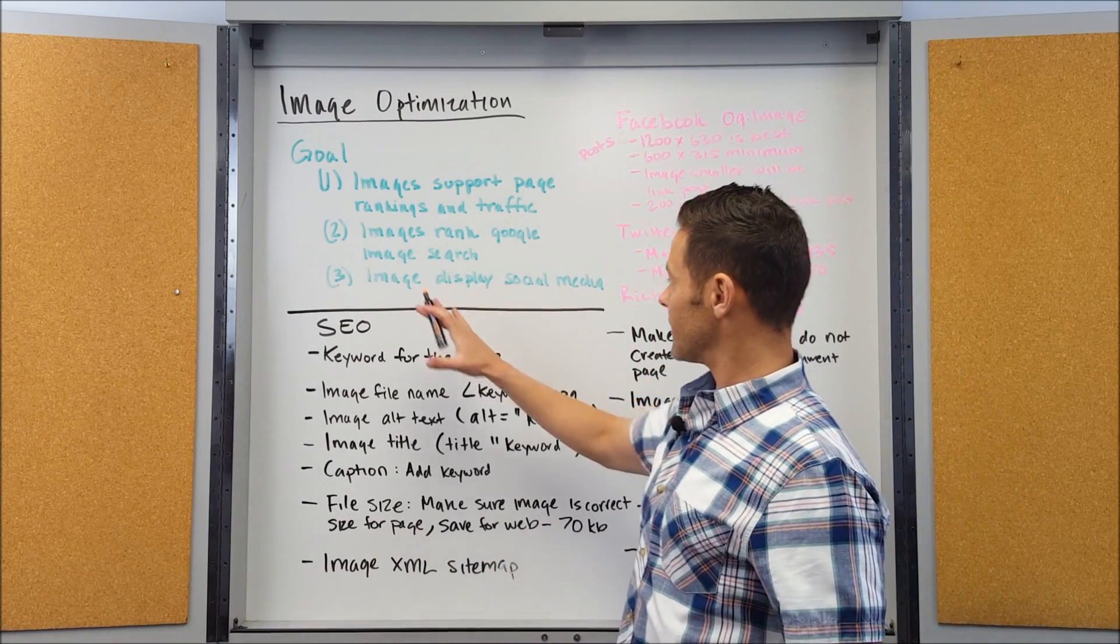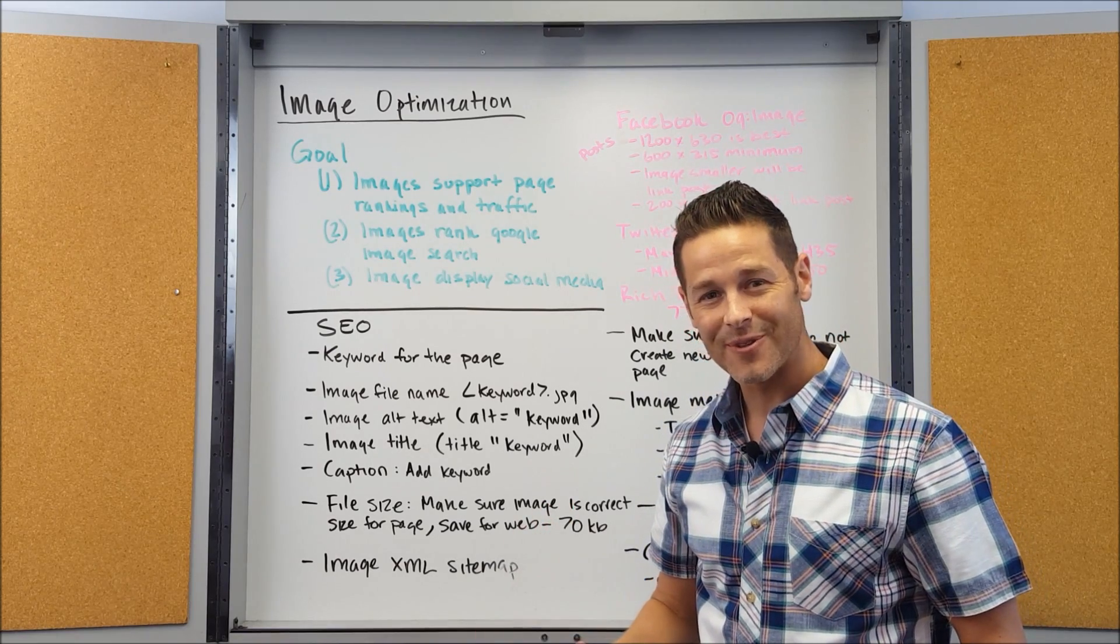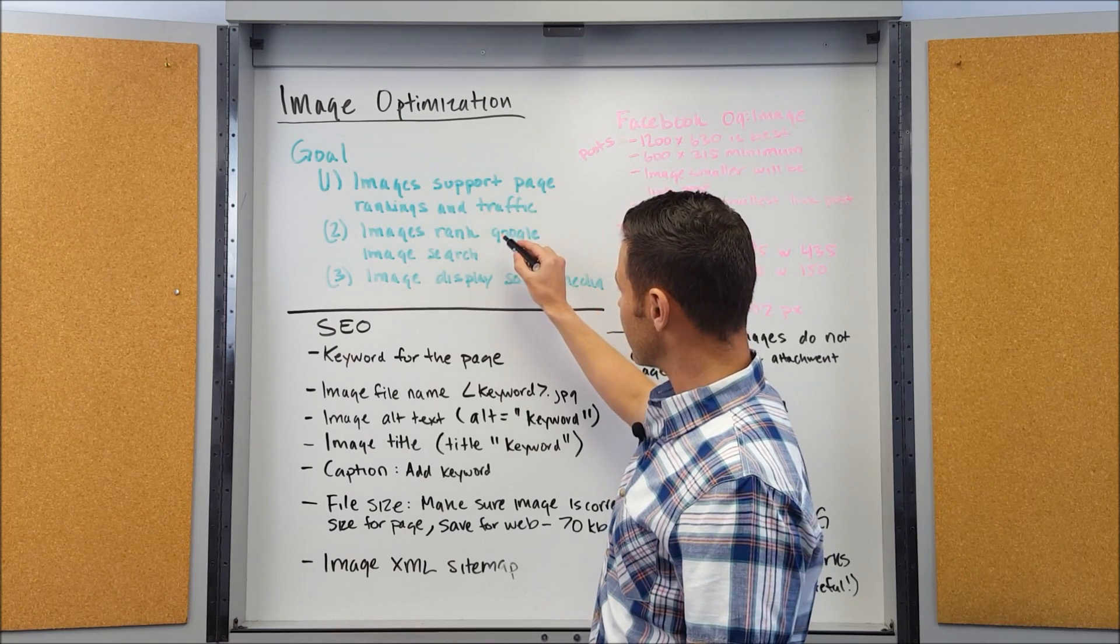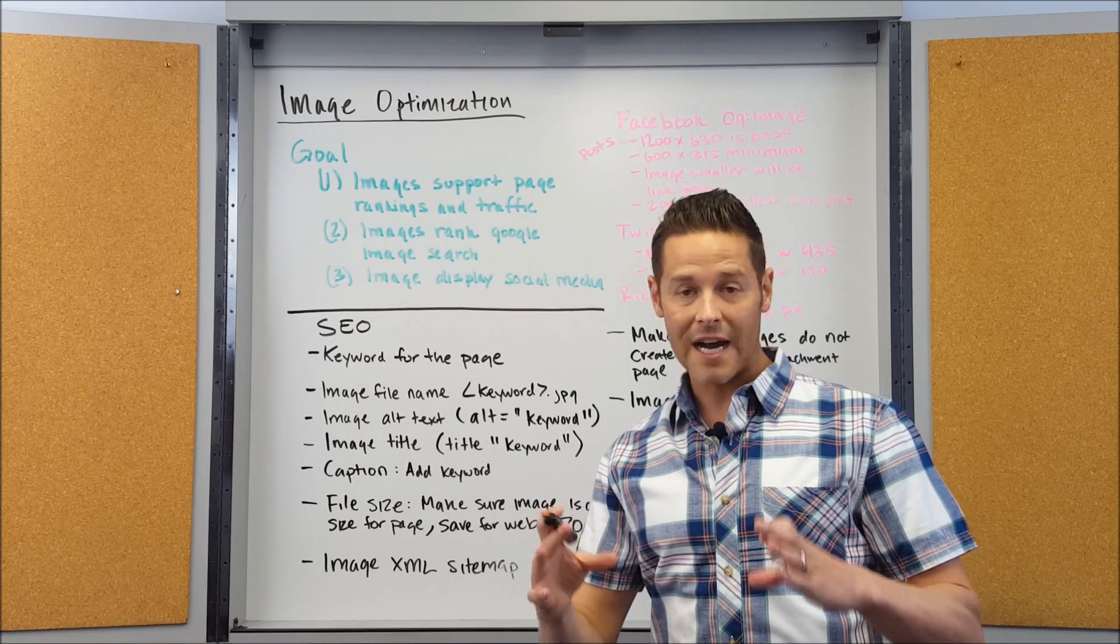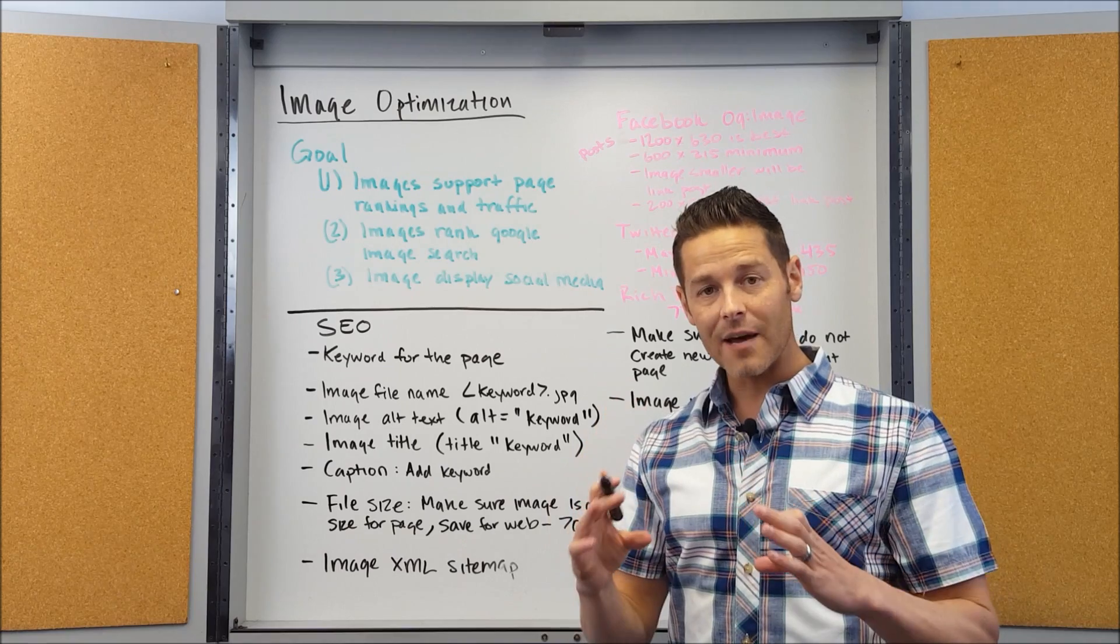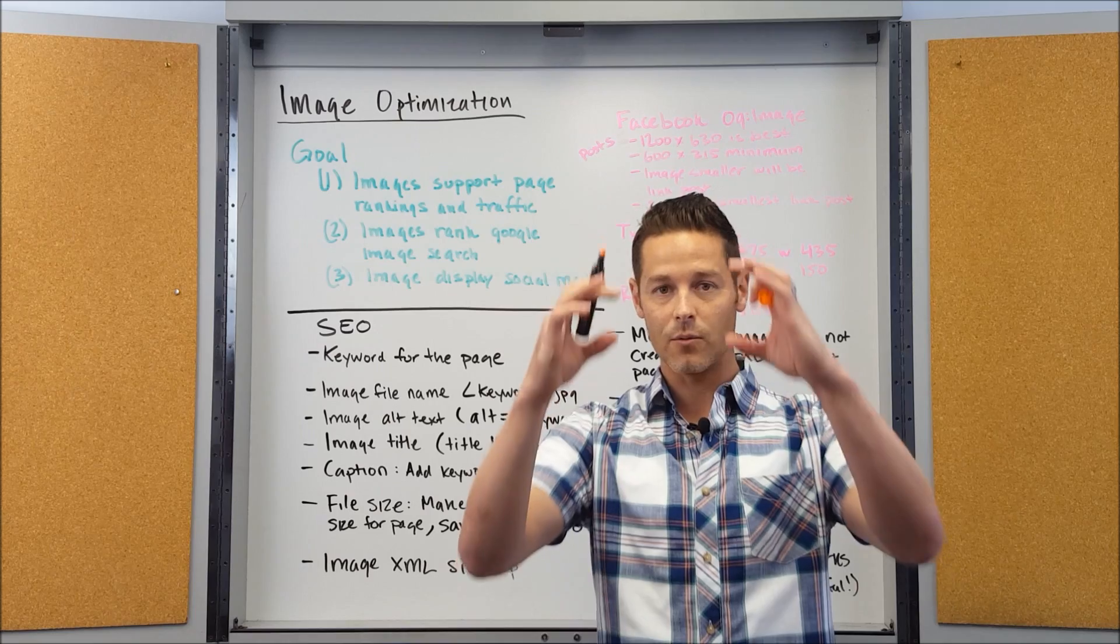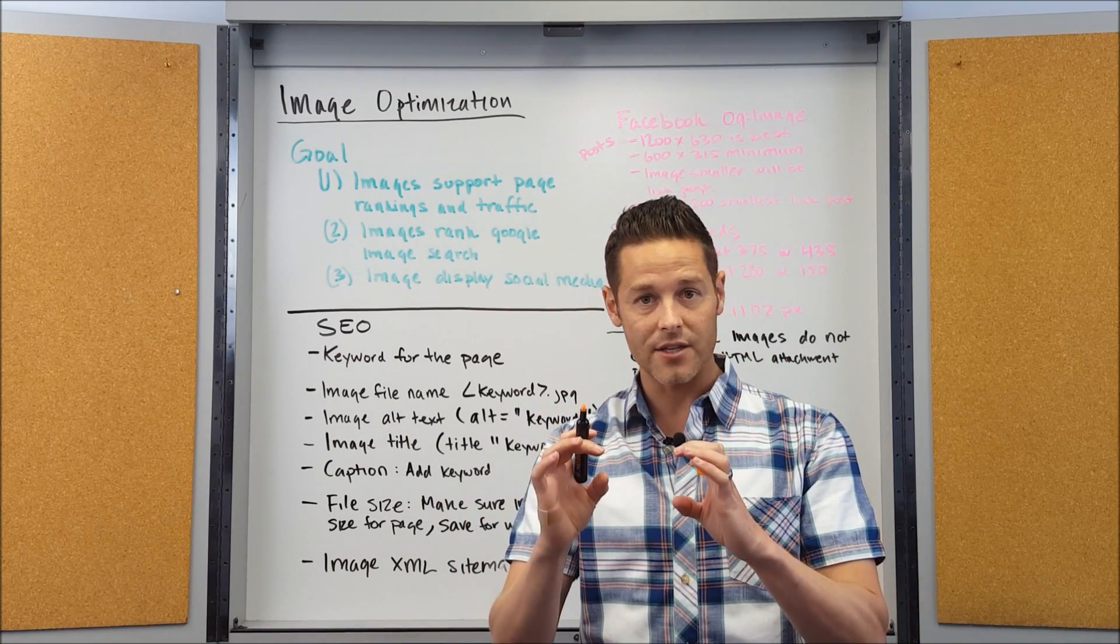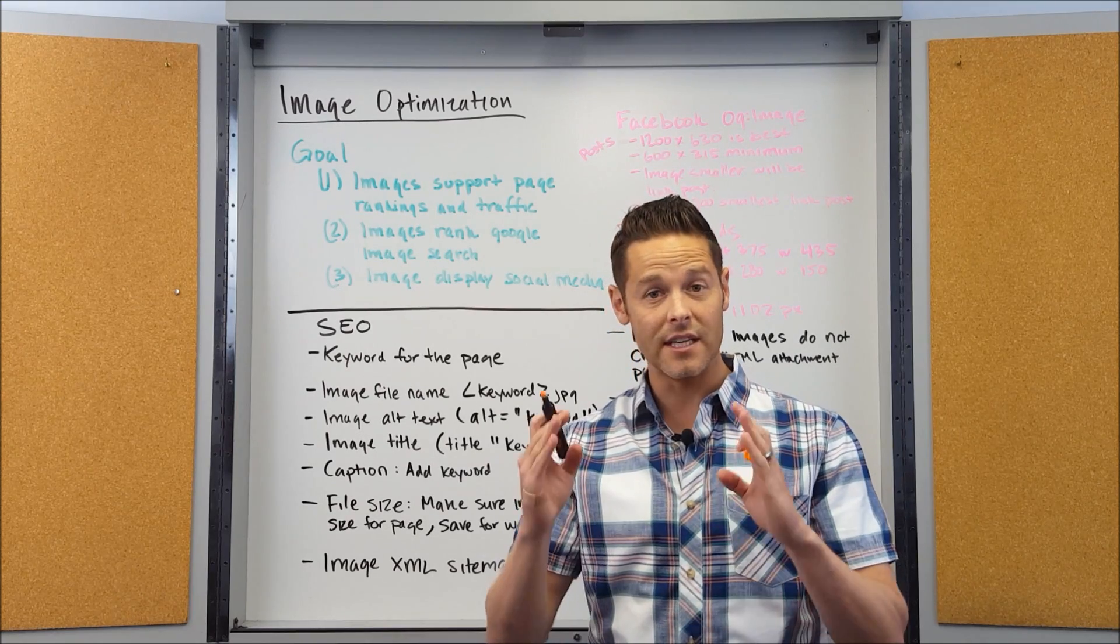What are your goals with image optimization? There's three main goals. The first goal is that the image supports the page rankings and the traffic on an individual page. So if I have a page for internet marketing company San Diego, I want to have images on that page that relate to that keyword so that when Google crawls the page they want to rank that page higher for that term because the image has been optimized properly.